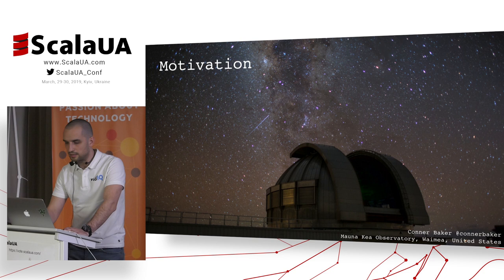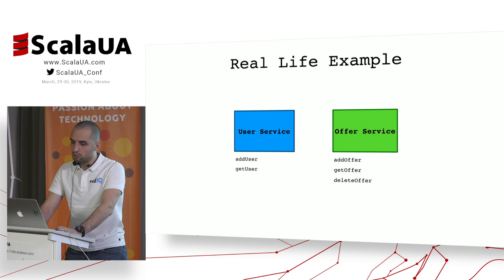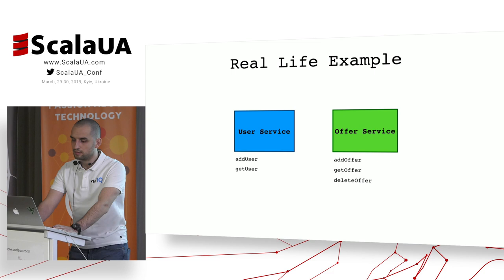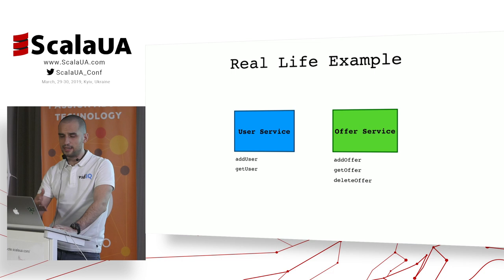Just to be closer to the domain area, I decided to create a tiny example for this presentation. I'm going to consider two services. The first one is the user service, which has two methods: add user and get user. The second one is the offer service, which has three methods: add offer, get offer, and delete offer.